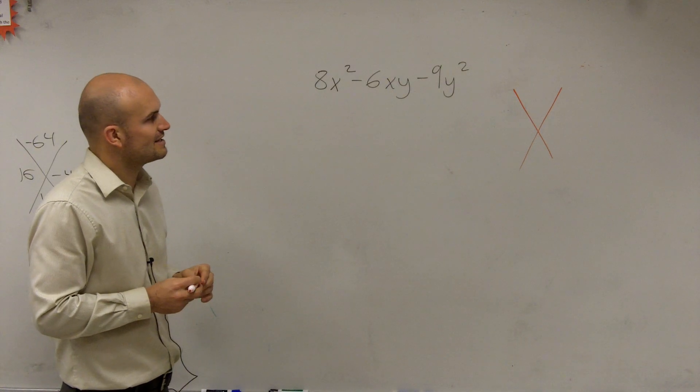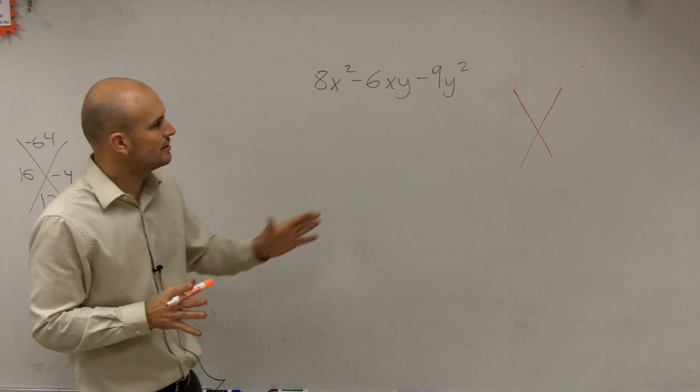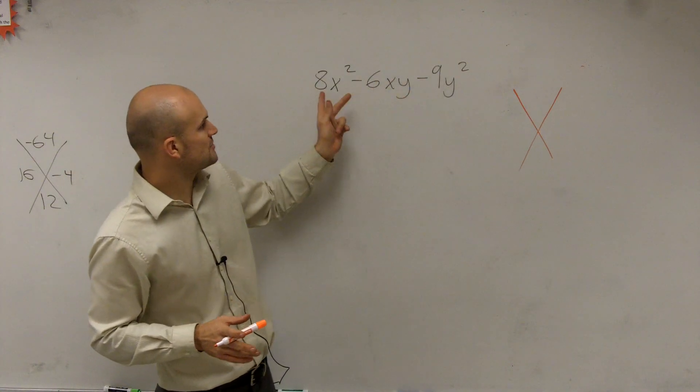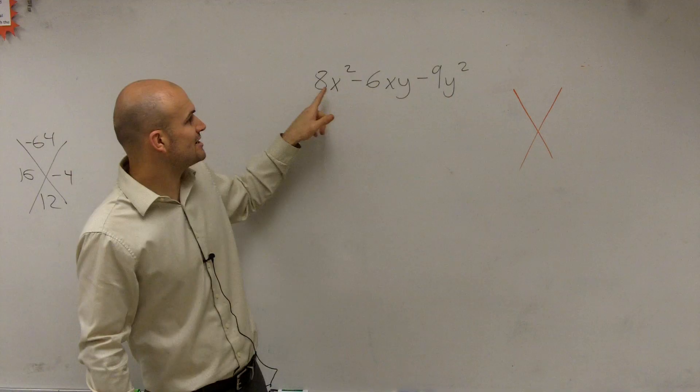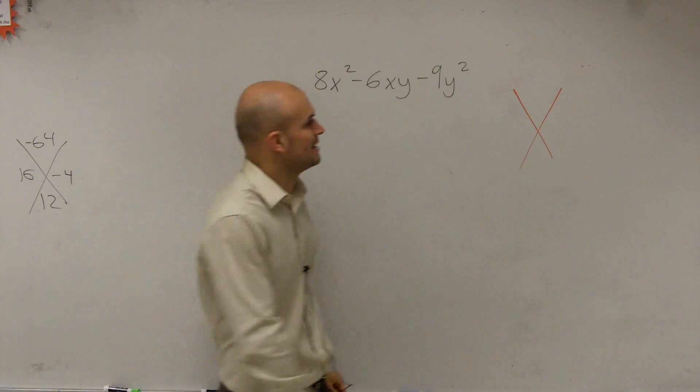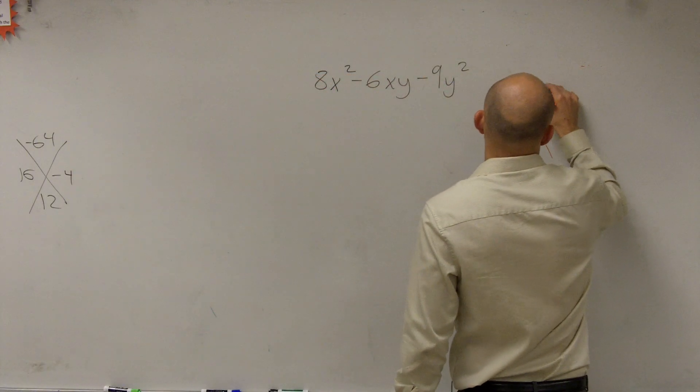and then add to give us, well actually, not multiply to give us negative nine, because we notice we have an eight in front, correct? So we need to make sure we multiply eight times negative nine, which would be negative 72,